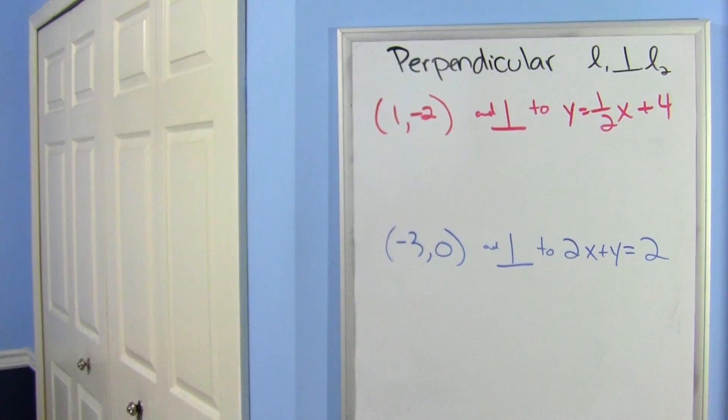Your turn. Alright, go ahead and find a perpendicular line that goes through the given points and is perpendicular to the given equation. I'm going to show you the answers in 3, 2, 1. Here are your answers. I hope you got them right.